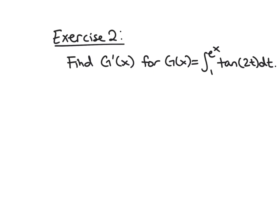For your second exercise, let G be the integral from 1 to e^x of tan(2t) dt, and find its derivative using FTC Part 1. Because you have e^x as the upper bound, you should be thinking chain rule. Thank you for watching.